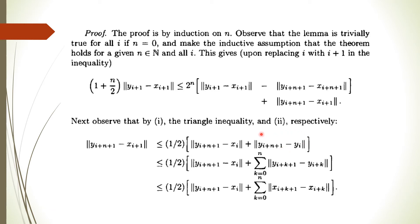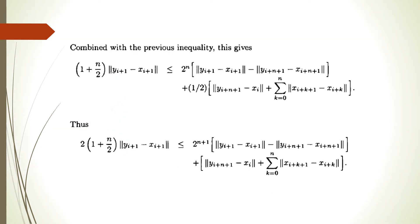Further, we can write this norm in terms of a summation using the triangle inequality by adding and subtracting y_i terms. This norm is less than or equal to a sum of terms. By using the second condition, the norm of the y differences is less than or equal to the norm of the x differences, so we replace accordingly. Combining these two inequalities gives us the required inequality.